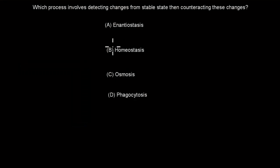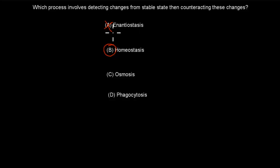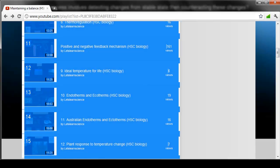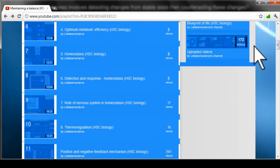The correct answer is B — homeostasis. Homeostasis involves detection, response, and keeping a constant internal environment. Enantiostasis is different — the body can cope with fluctuations but doesn't actually maintain a constant internal environment. Osmosis and phagocytosis are simply wrong. This comes from dot point five: Homeostasis, which is video number five.